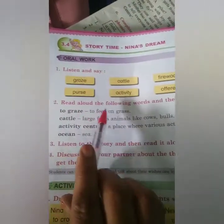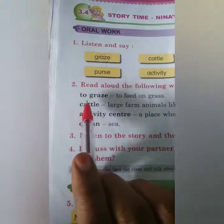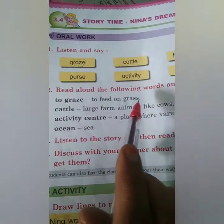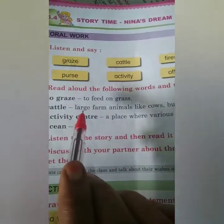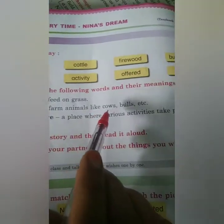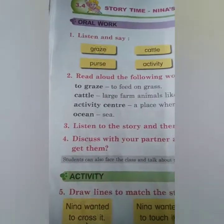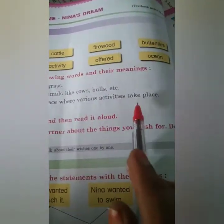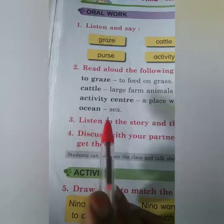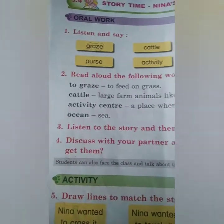Read aloud the following words and their meanings. To grace: to feed on grass. Cattle: large farm animals like cows, bulls, etc. Activity Center: a place where various activities take place. Ocean: sea.